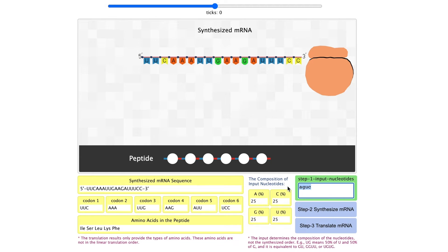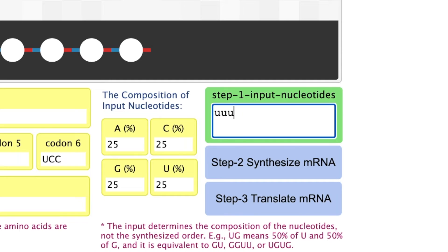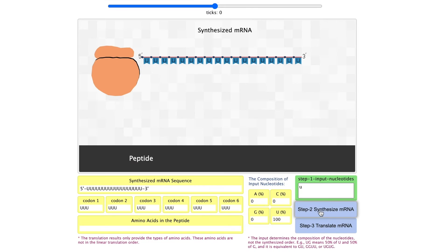Just like Nirenberg, students can start with one type of nucleotide. They can input U to synthesize poly-U mRNA and then translate. They can see only phenylalanine is incorporated into the peptide, indicating triple U is the codon for phenylalanine.